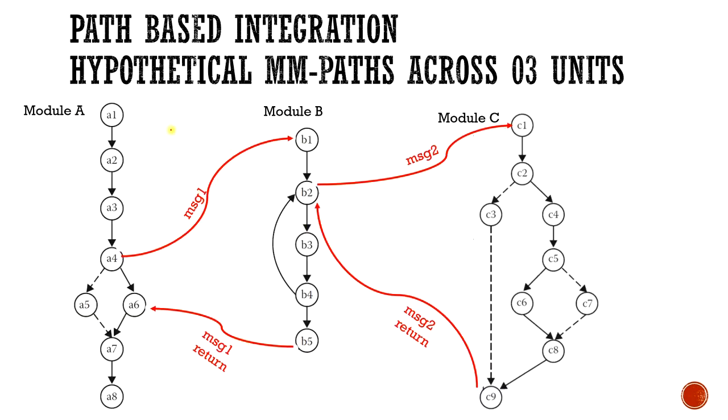When we talk about path-based integration, this is the whole module A. This whole code is A1, A2, A3, A4, A5, A6, A7, A8. These are all codes, eight functions, related functions. If they are correct, they will pass to other functions by message. These are all module A, this is called MM-path. Then this is module B: B1, B2, B3, B4, B5. These are five execution codes, all modules in one module.